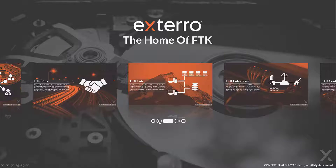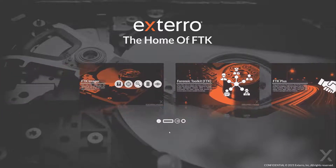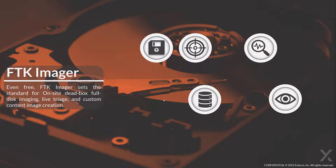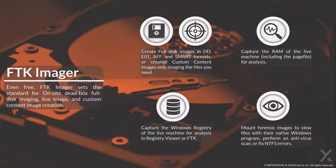So what we'll do is we will actually start with Imager. We'll come over here to the left and select Imager. Imager is our free imaging tool — it can create full disk images and much more, including custom content images. This is super important: if you only want a certain type of data set, you can create that with Imager. You can also capture the RAM of a live machine and capture the Windows registry by a simple click of the button.